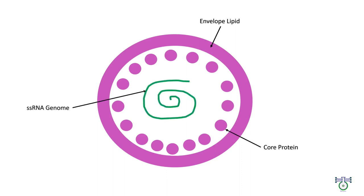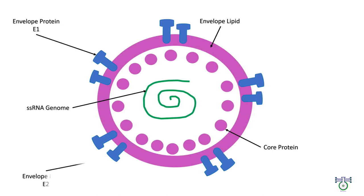The nucleocapsid with icosahedral symmetry consists of genomic RNA and many copies of core proteins. The nucleocapsid is surrounded by a host cell-derived lipid bilayer envelope in which envelope glycoproteins E1 and E2 are embedded. Core proteins and E1-E2 envelope glycoproteins are major protein components of the virion.